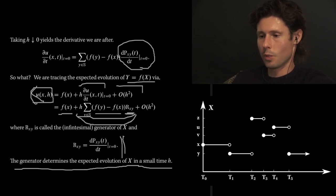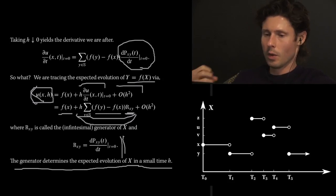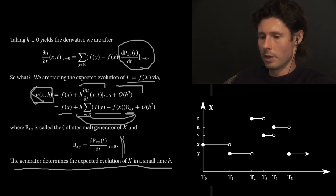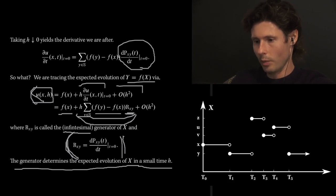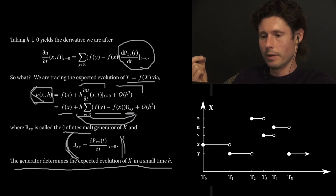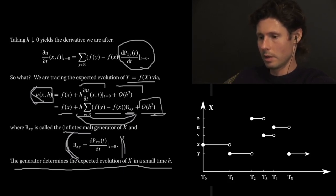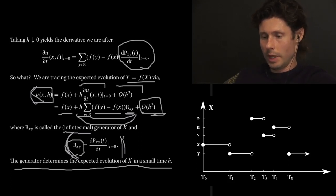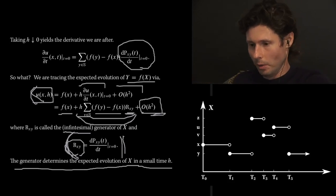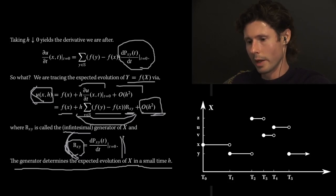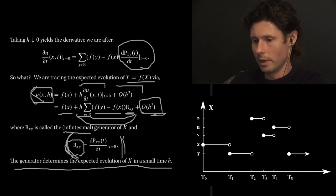We now have a good approximation for u(x, h) in terms of the starting position. The starting position of y was f(x), and this term is telling us how to update that position to account for the fact that a little interval of h time has passed. r_xy, the generator, is generating the update to our location — it's responsible for updating that position on very small or infinitesimal length timescales. That gives you a sense of why this quantity got the name generator and why the word infinitesimal is often prepended to it.